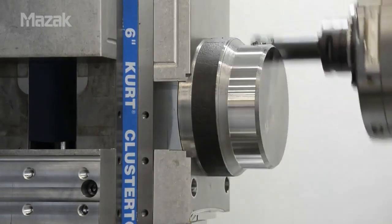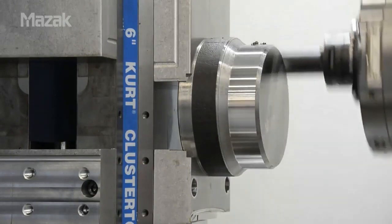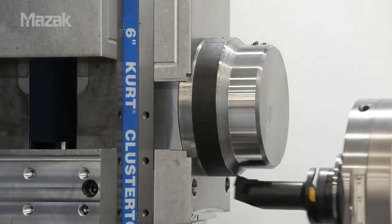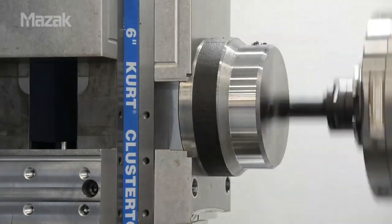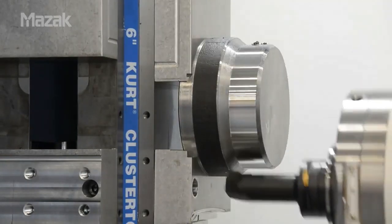The orbit assist display will pull information from the tool data page to calculate the surface speed of the cut. It will also monitor the acceleration rate allowed for that specific machine to optimize the cut.